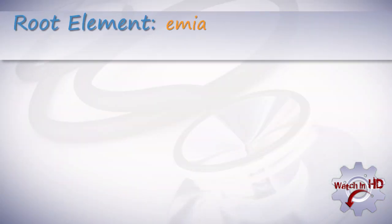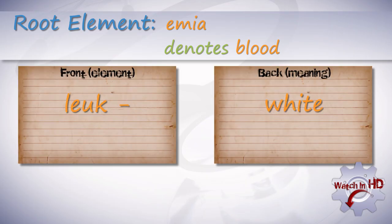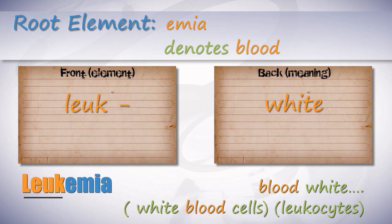The suffix '-emia' denotes the blood. The prefix 'leuk-' means white. The word leukemia means white blood — referring to white blood cells, or leukocytes.